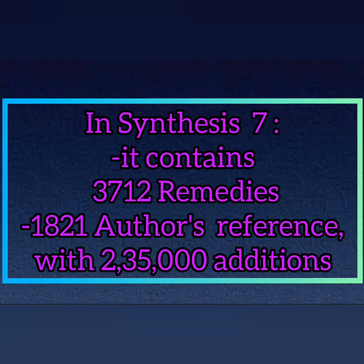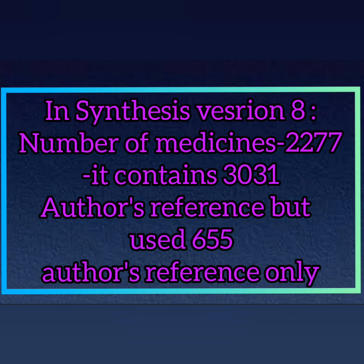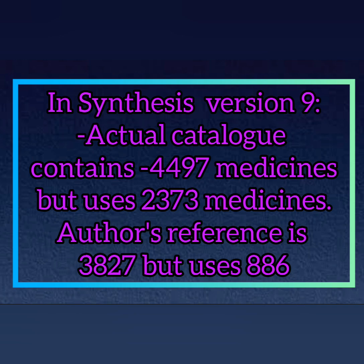In Synthesis version 7, it contains 3,712 rubrics and has 1,821 author references with 235,000 editions. In Synthesis version 8, the number of medicines is 2,277, with 3,031 author references but only 655 authors referenced. In Synthesis version 9, the actual catalog contains 4,497 medicines but uses 2,373 medicines only, with author references of 3,827.